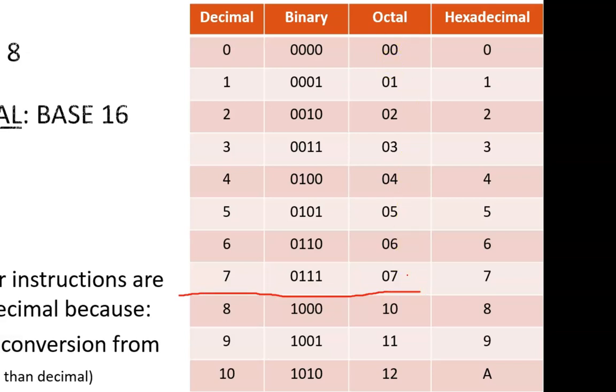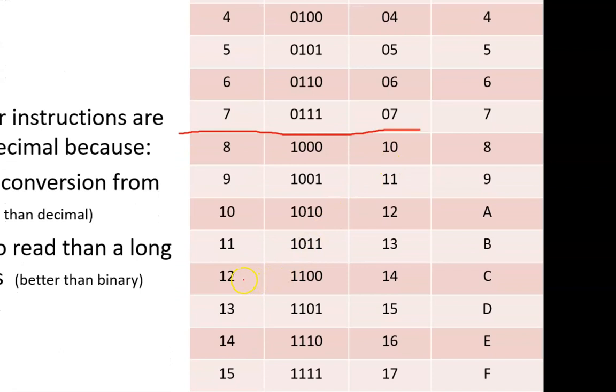But then to reach 8, we need to use the next digit position. The 1 on the left carries a weight of 8, so this number has a value of 8 plus 0. Similarly, let's look at decimal 12. In octal, the 14 indicates 8 plus 4. If we were to extend this chart to decimal 16, then the octal representation would be 20.